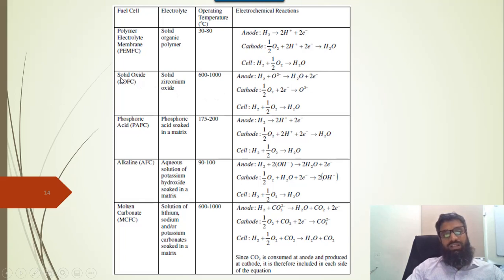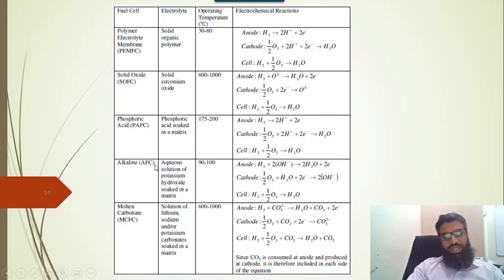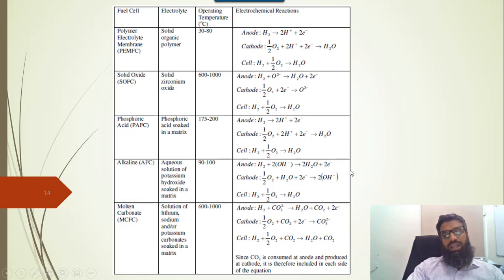The second type is solid oxide fuel cell. Its electrolyte is solid zirconium oxide and it works at approximately 600 to 1000 degrees Celsius. The chemical reactions are similar. Then we have phosphoric acid fuel cell, where the electrolyte is phosphoric acid soaked in a matrix. Its operating temperature is 175 to 200 degrees Celsius. Then we have alkaline fuel cell. The electrolyte is an aqueous solution of potassium hydroxide soaked in a matrix, and its operating temperature is 90 to 100 degrees Celsius.